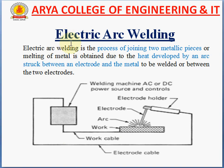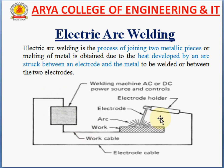Electrical arc welding means the process of joining two metallic pieces, or melting of metal, obtained due to the heat developed by an arc struck between an electrode and the metal to be welded, or between two electrodes. In this diagram, this is the welding machine which takes AC or DC power and controls it. One output point is connected to the electrode holder and the other point is connected to the work table, where the metal piece is placed.